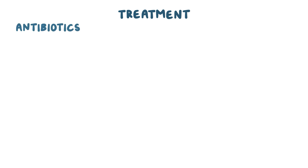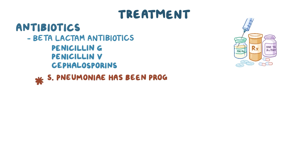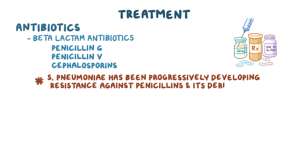Finally, treatment for infections with strep pneumoniae requires antibiotics, and the classic first line of treatment are beta-lactam antibiotics, like penicillins G and V, or cephalosporins. However, strep pneumoniae has been progressively developing resistance against penicillin and its derivatives, like amoxicillin and ampicillin.